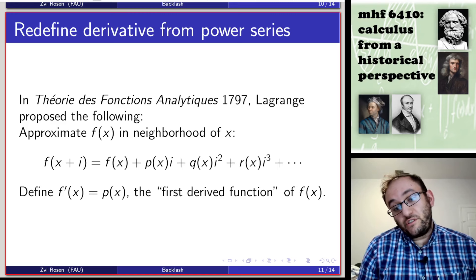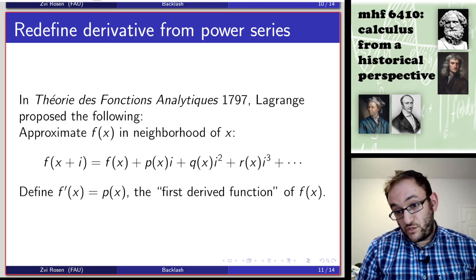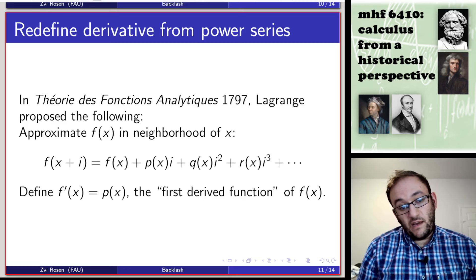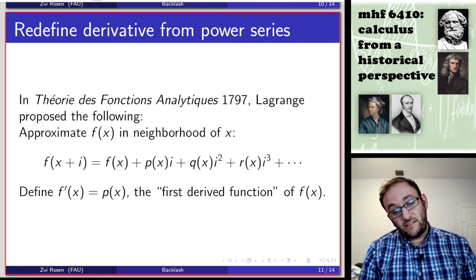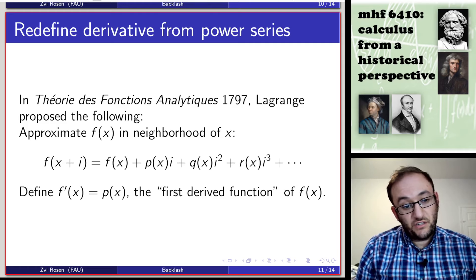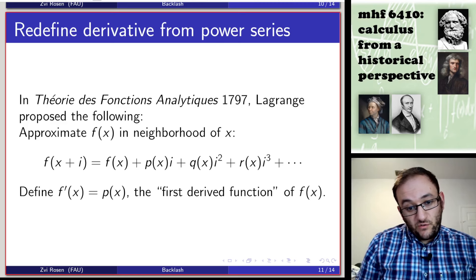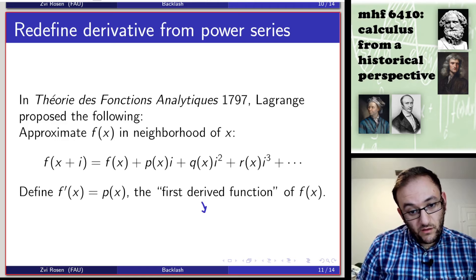Once you define this power series, you can just take the derivative, the first derivative of f, to be the coefficient of i, p of x. He called this the first derived function of f of x. That's why he has the single prime mark. Lagrange was the first to use that f prime notation. And it also was the source for the word derivative.